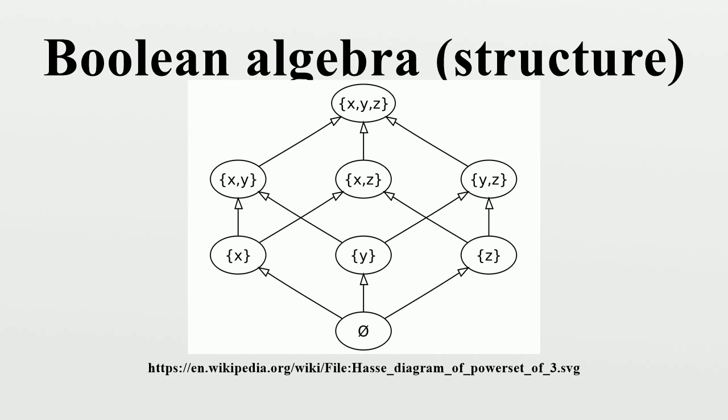The meet and the join of a and b is given by the greatest common divisor and the least common multiple of a and b, respectively. The ring addition a + b is given by LCM/GCD. The picture shows an example for n = 30.